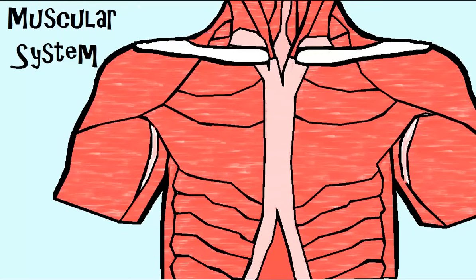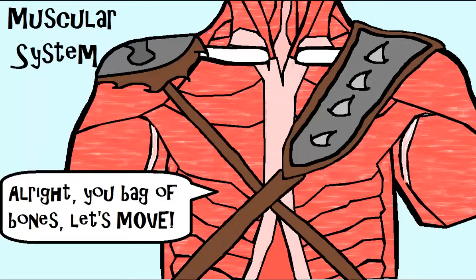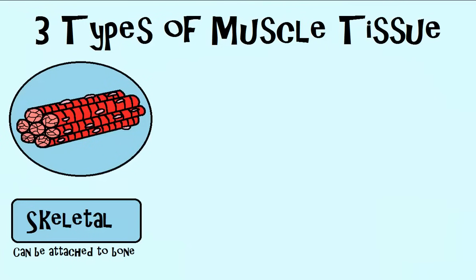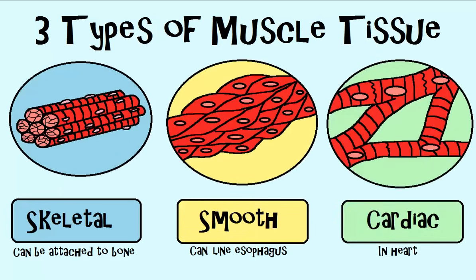Number seven, muscular system. Your bones have to move some way or another, and they can't do that without muscle to move them. You have three major types of muscle tissue, known as skeletal, smooth, and cardiac muscle.